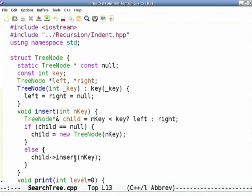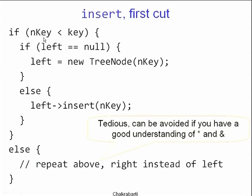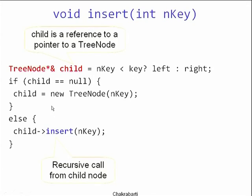You could write the code more simply — if the key to be inserted is less than this node's key, you do it on the left; otherwise on the right. But that replicates the same code twice. A small trick: instead of writing the code twice with left and once with right, write it exactly once using a variable called 'child'. Child has to be a reference to a tree node pointer — not just a pointer, not just a reference, but a reference to a pointer.